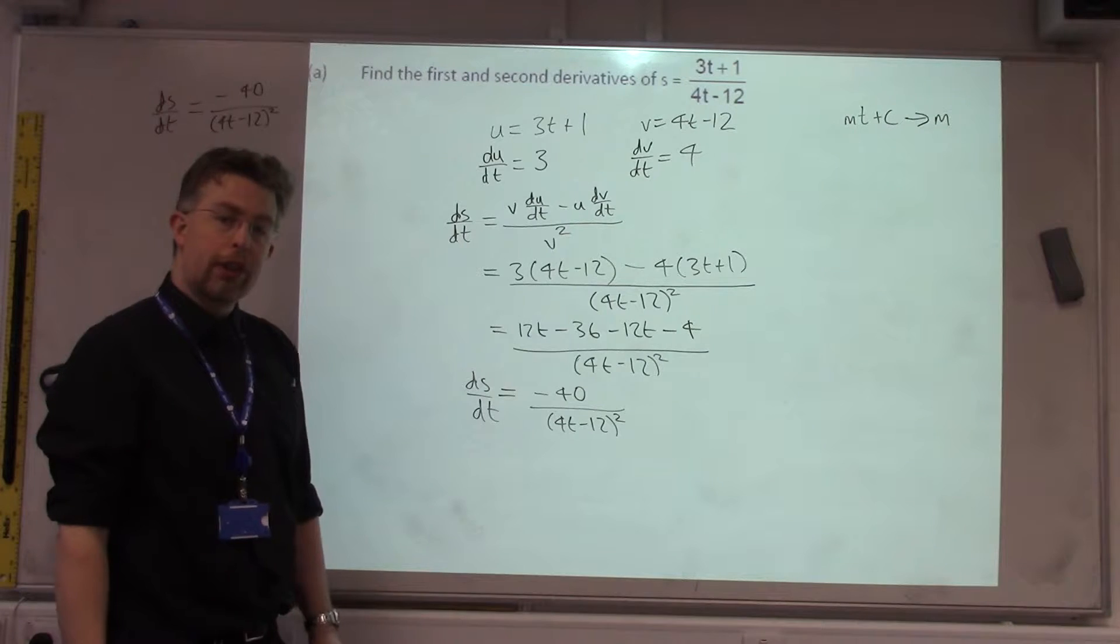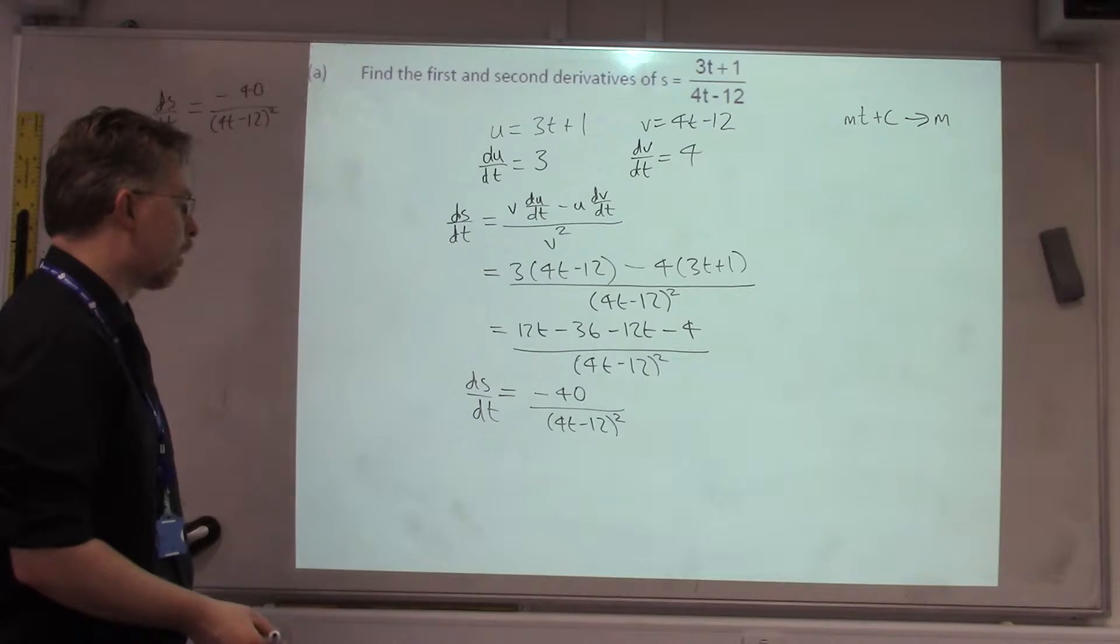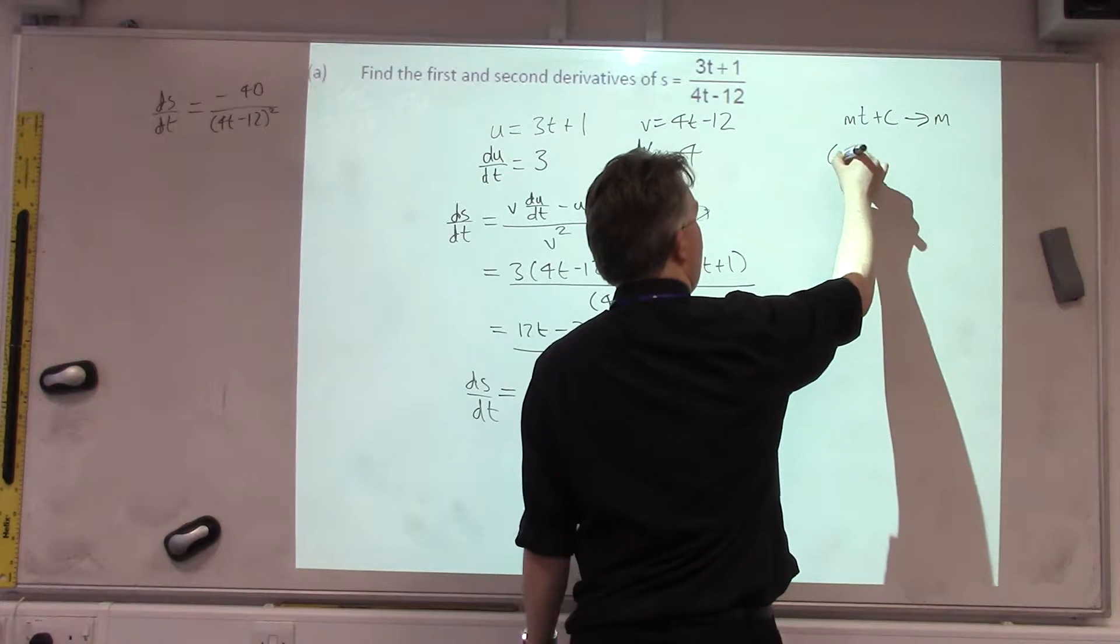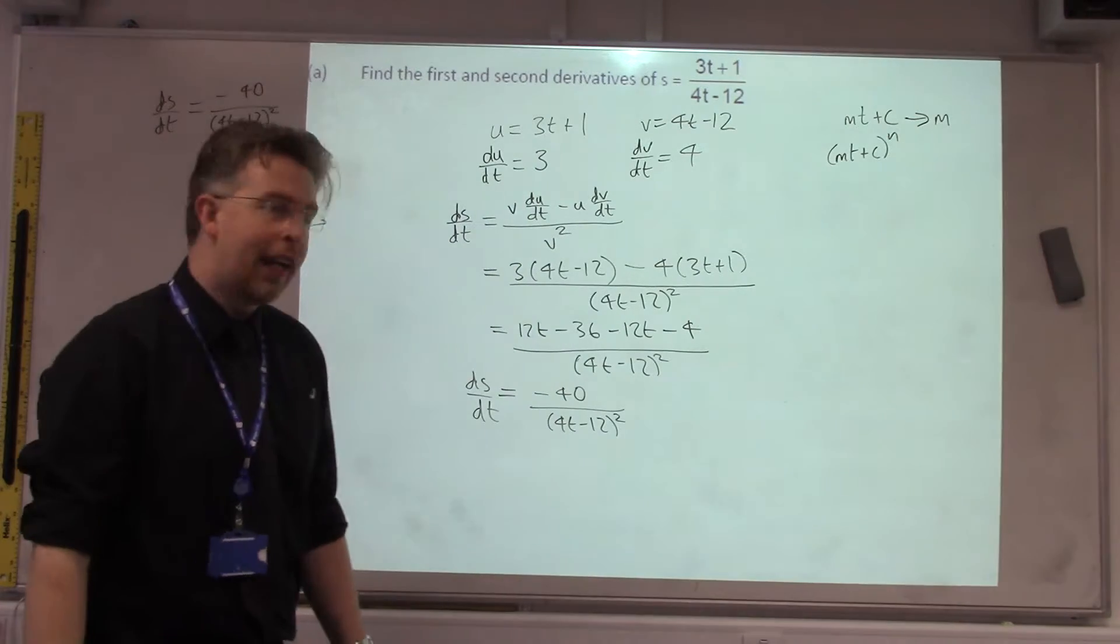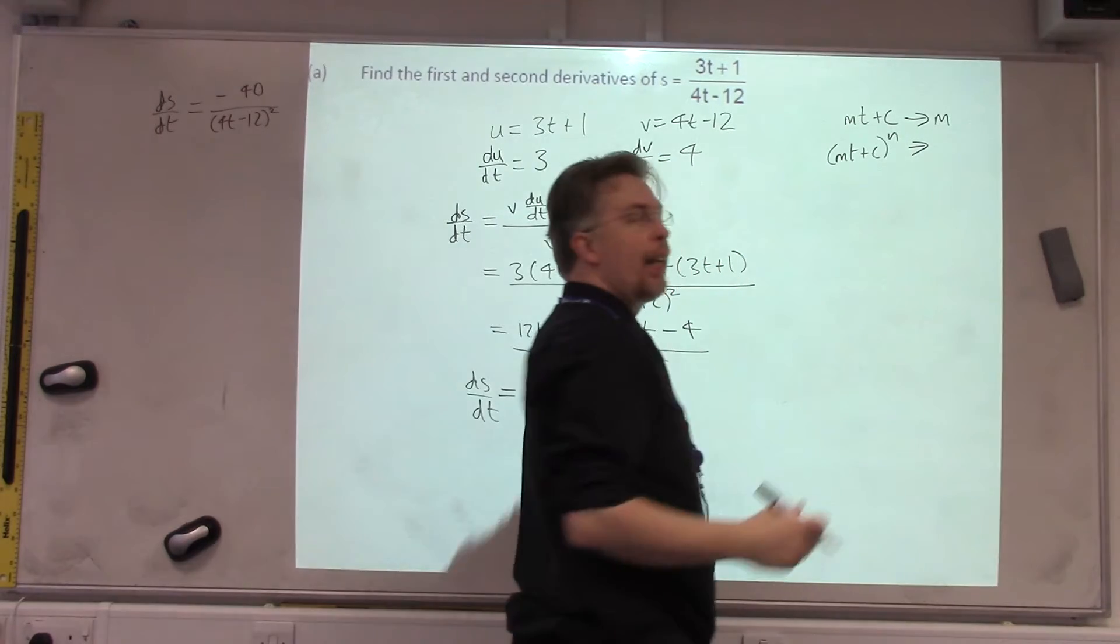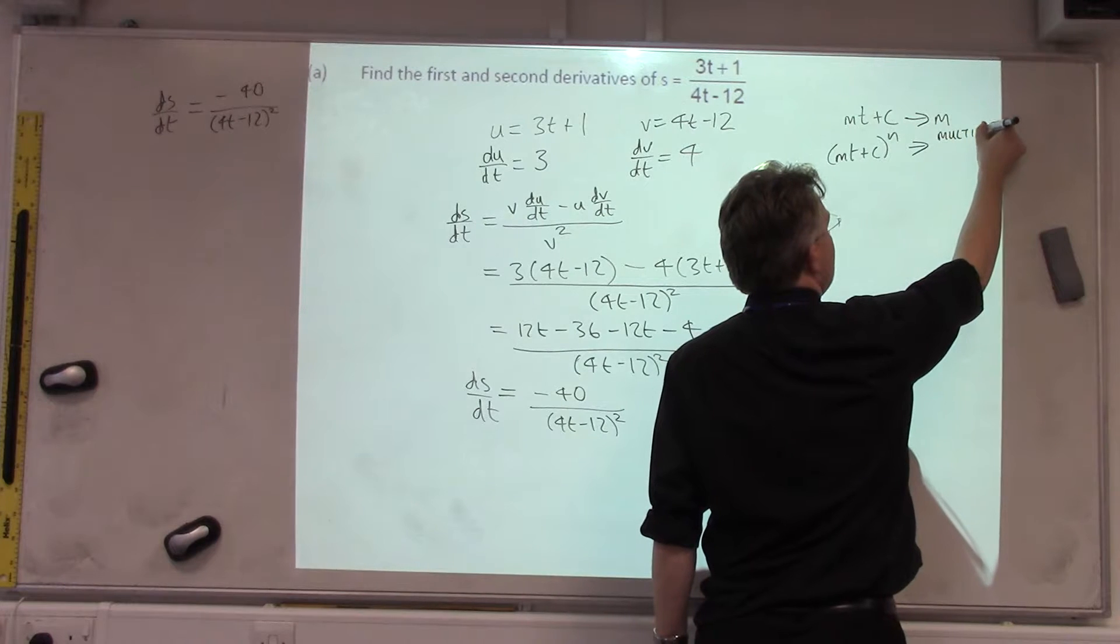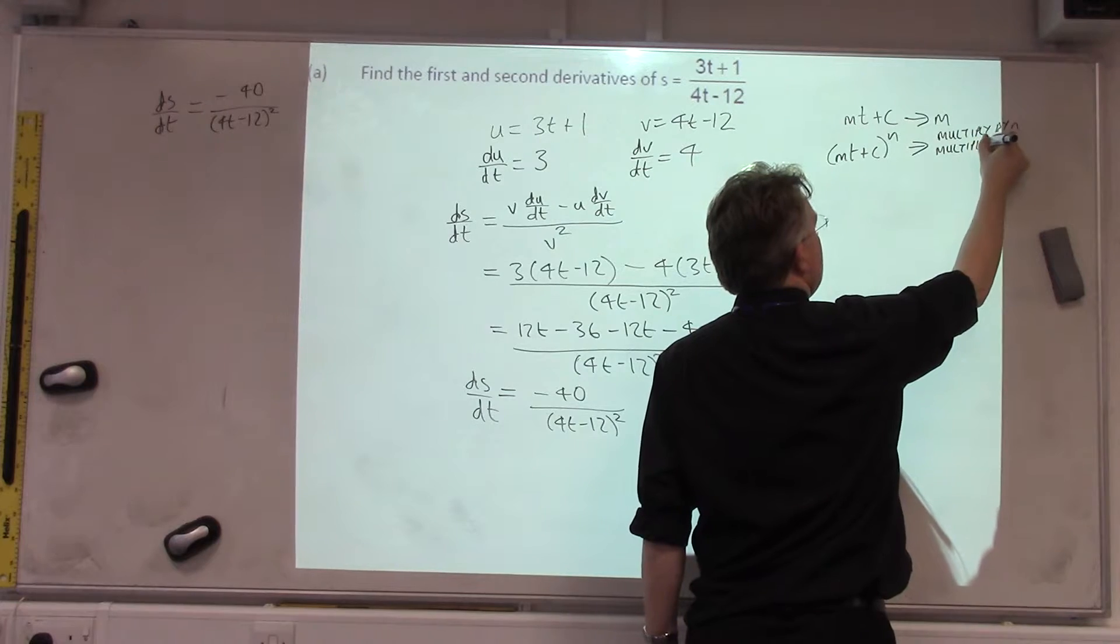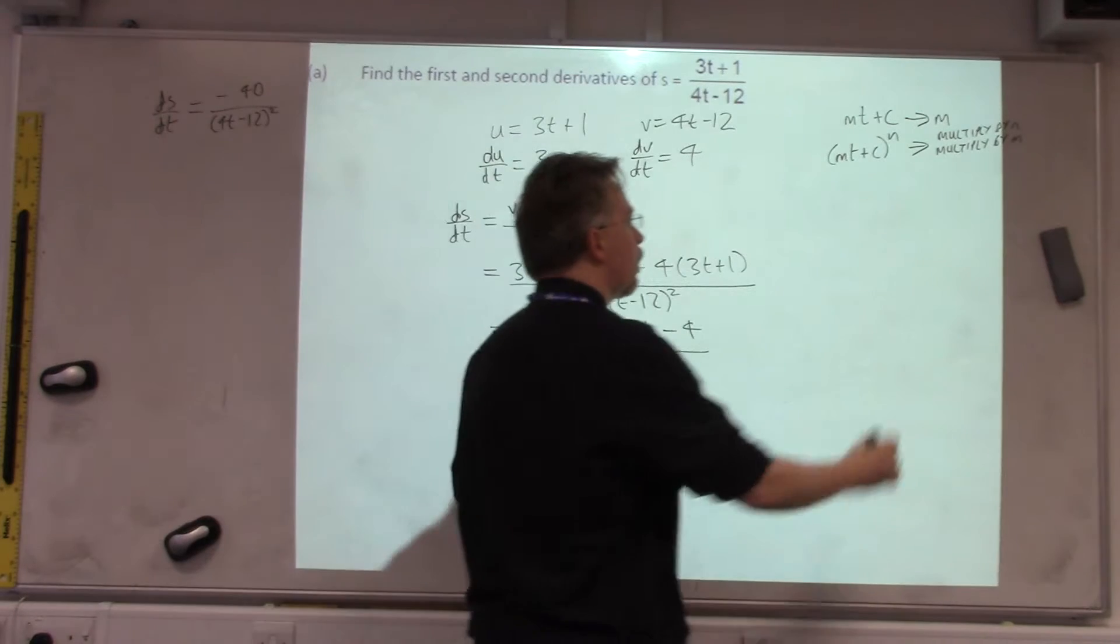Right, we also need to do the second derivative. So, we need to differentiate this. Again, we've got a function over functions, so we can use the quotient rule, but we'll need an extra rule for differentiating something like this. So, if you've got MT plus C to the power of N, then the N and the M we times at the front. So, you multiply by N, you multiply by M and then you reduce the power by 1.